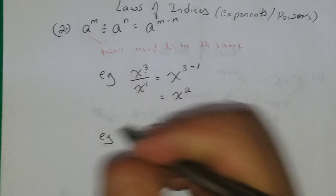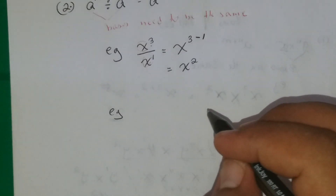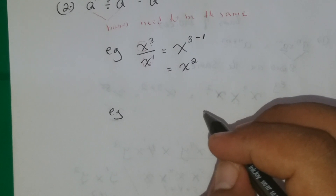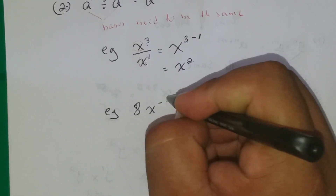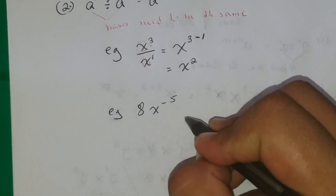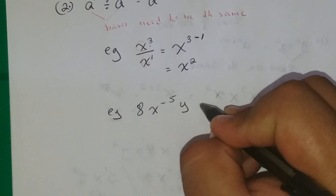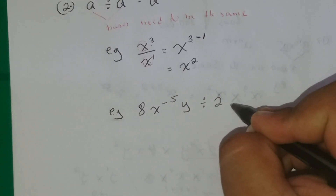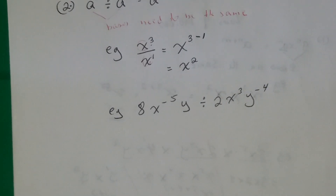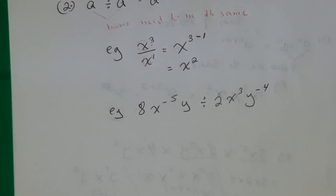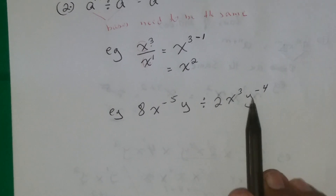Example two: let's say we have 8x to the negative five y, divided by 2x to the third y to the negative four. Be careful with these ones, because if it has a negative power then we already have a negative from the law — which is minus — and we will have another negative coming from the problem itself.